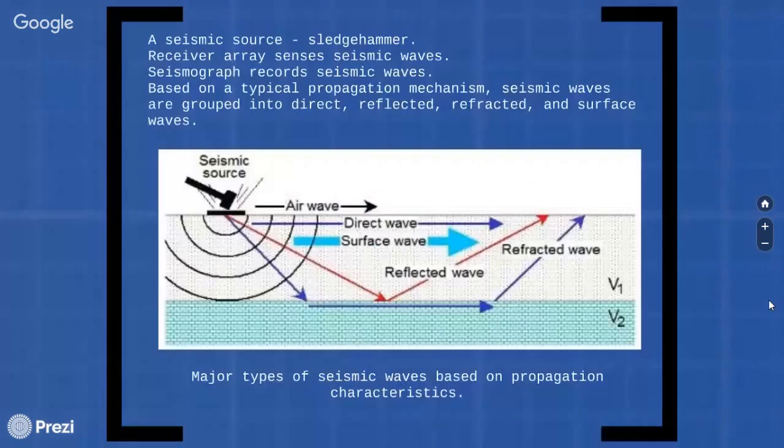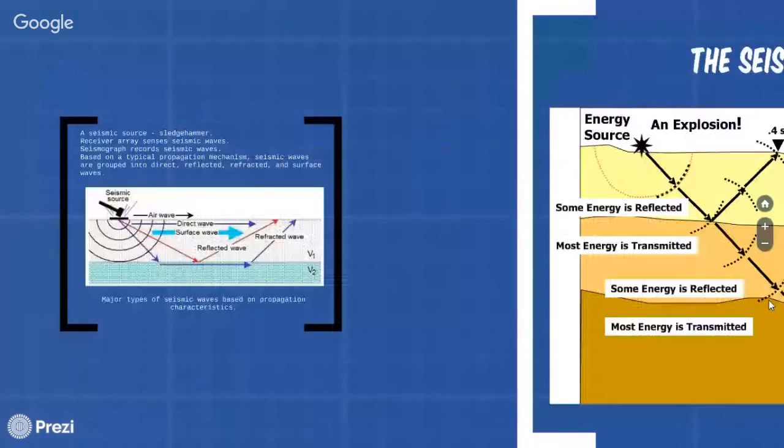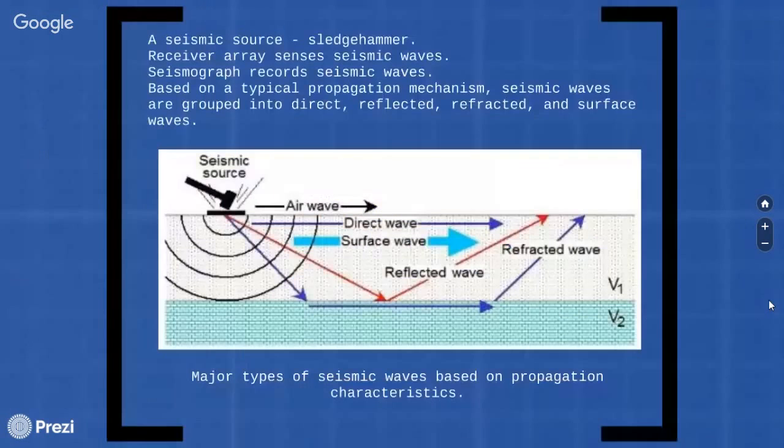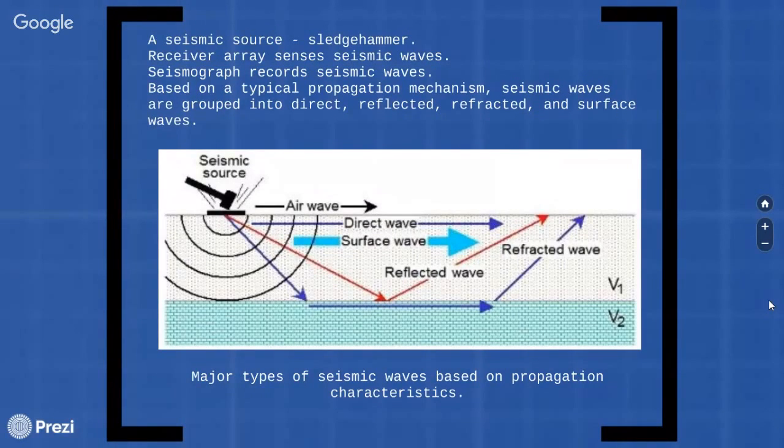How do Seismic Survey generate? A seismic source such as Sledgehammer is used to generate seismic wave, sent by receivers deployed along a present geometry called Receiver Array and then recorded by a digital device called SeismGraph. Based on typical propagation mechanisms using Seismic Survey, seismic waves are grouped primarily into direct, reflected, refracted and surface wave.